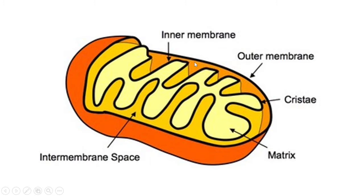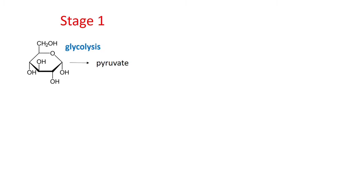Between the inner membrane and the outer membrane is a space called the intermembrane space, because it's in between the two membranes. And finally, the space inside the inner membrane is called the matrix. So we have the matrix on the inside, then the inner membrane, then the intermembrane space, then the outer membrane.